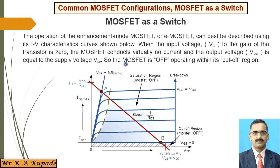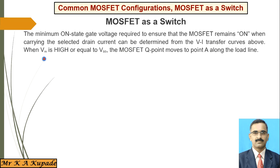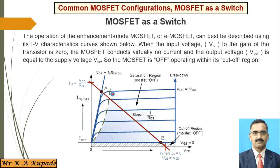So the MOSFET is in the off state, operating within its cutoff region. Unless you apply a gate voltage VIN that reaches or exceeds the threshold voltage, the transistor remains in the off position. Whenever you want to turn on the transistor, you apply gate voltage; when it crosses the threshold voltage, drain current ID begins to flow, and due to that current, the transistor is put into the on position.